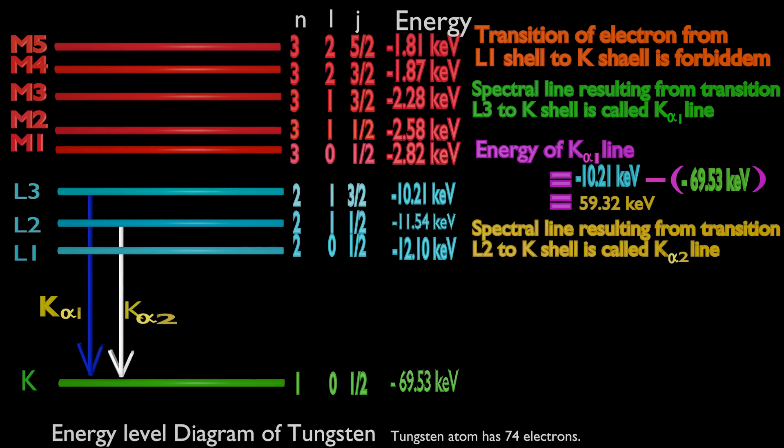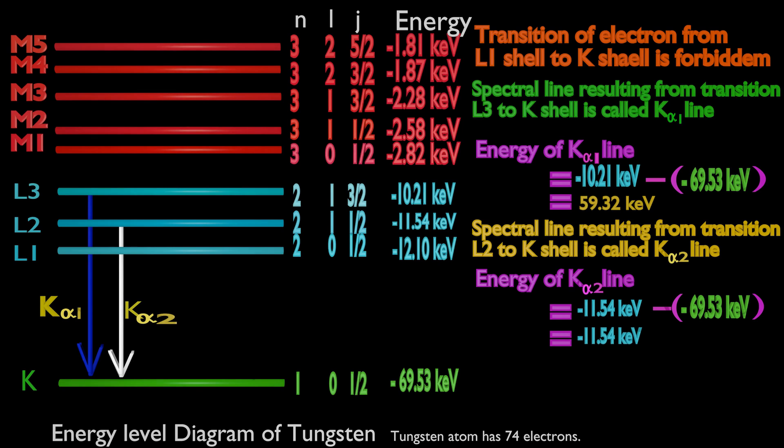Spectral lines resulting due to transition from L2 subshell to K shell is called K alpha 2 line. Energy of K alpha 2 line equals energy of electron in L2 subshell minus binding energy of K shell, equals 57.98 kilo electron volts.